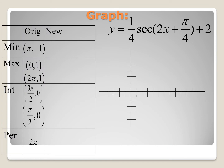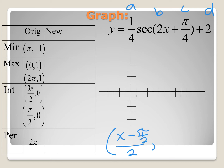For our secant example, we have a, b, c, and d values. For a, we have 1 fourth; for b, we have 2; c is positive pi over 4; and d is positive 2 as well. Our transformed equation is going to be x minus pi over 4, divided by 2 for the x-transformation, and y times 1 fourth plus 2 for the y-transformation.